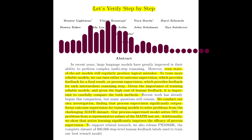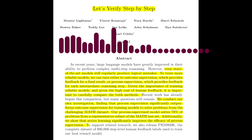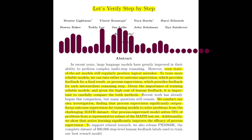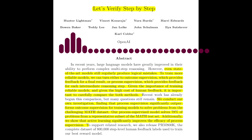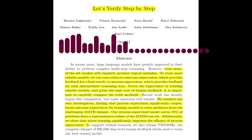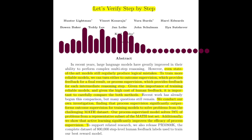The paper highlights the importance of human feedback in process supervision. Human data labelers were tasked with evaluating each step in model-generated solutions to math problems. They assigned labels of positive, negative, or neutral, indicating whether the step was correct, incorrect, or ambiguous. This data was then used to train a process-supervised reward model, PRM. The paper compares the performance of the PRM with an outcome-supervised reward model, ORM.